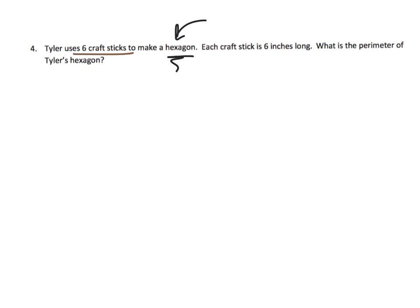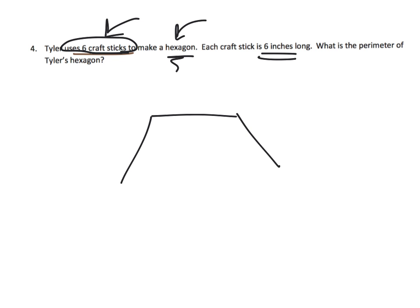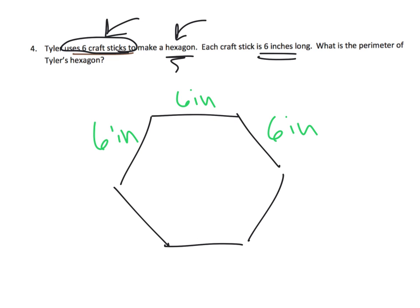Tyler uses six craft sticks to make a hexagon. A hexagon is a six-sided figure, and because we're using six identical sticks — all six inches long — that means it's a regular hexagon. So our regular hexagon looks something like that, and each side length is six inches: six, six, six, six, six, six.